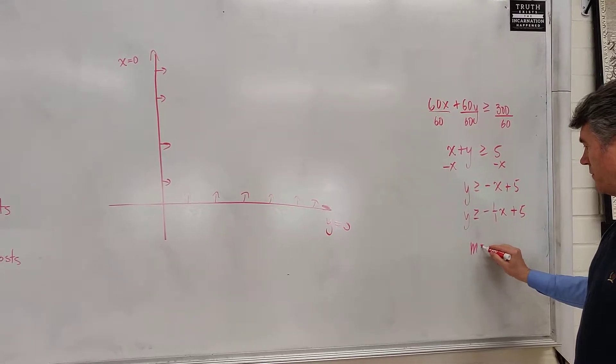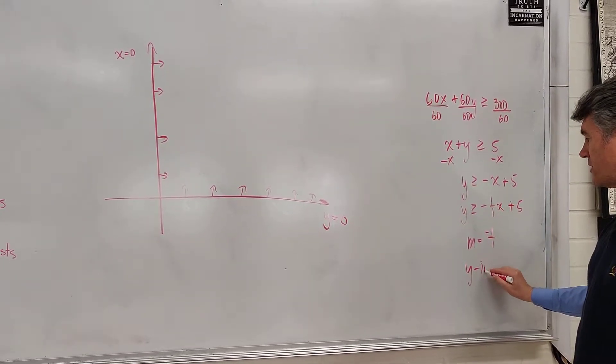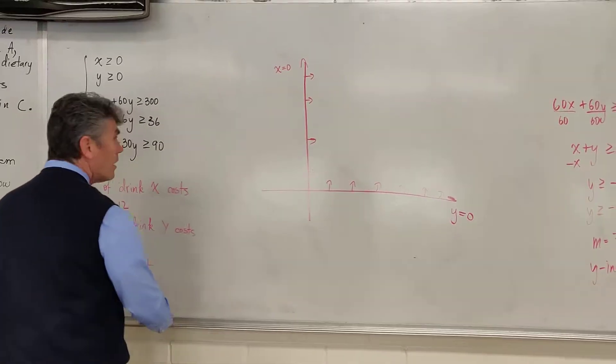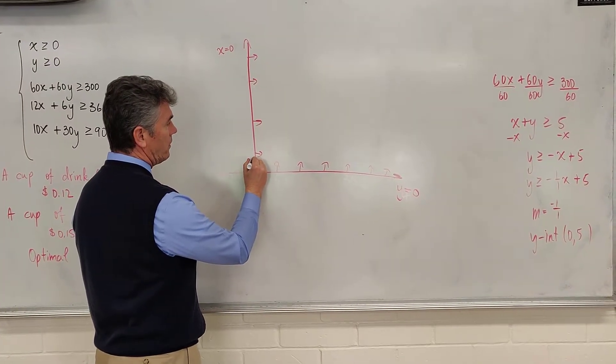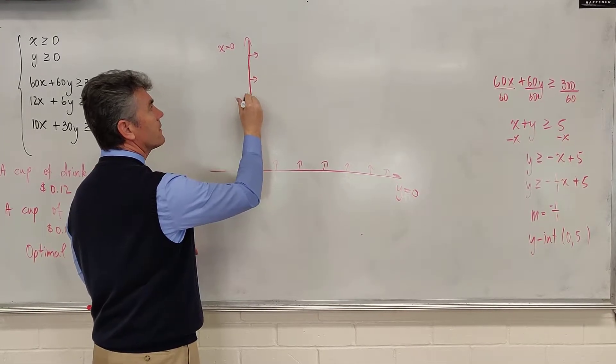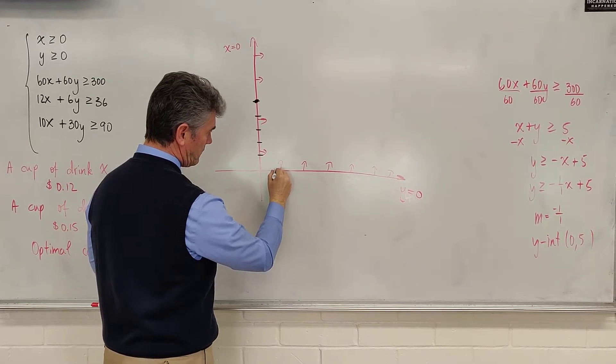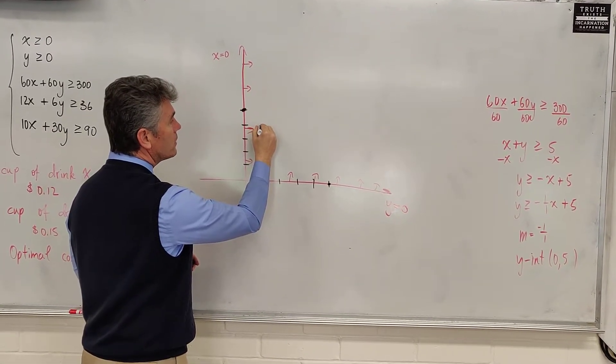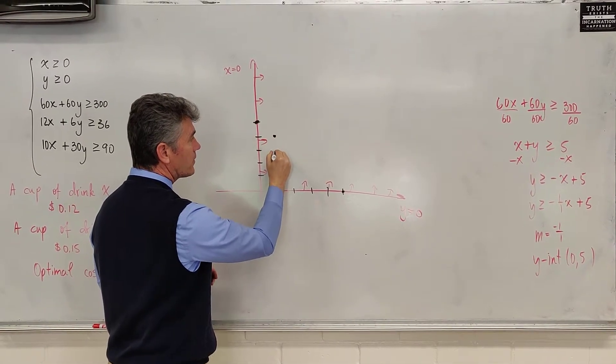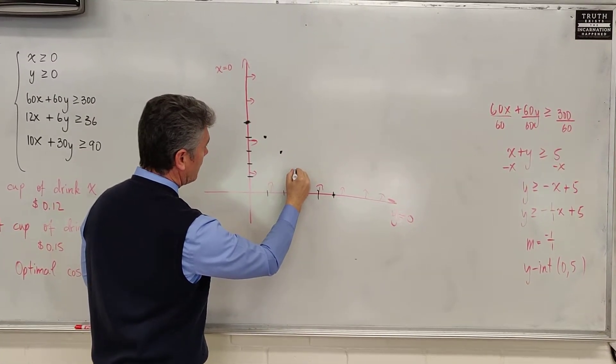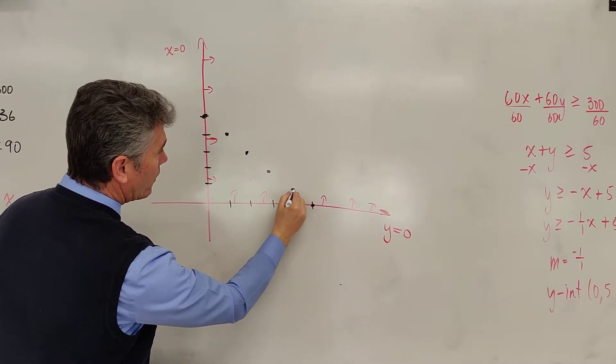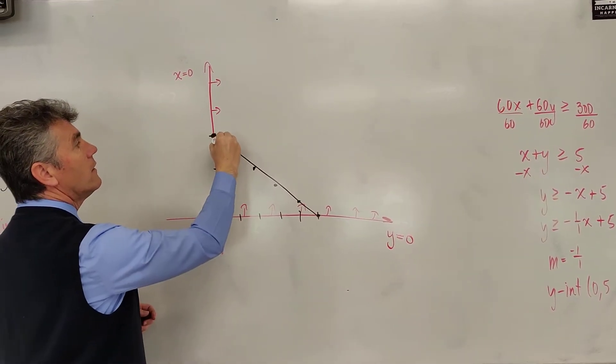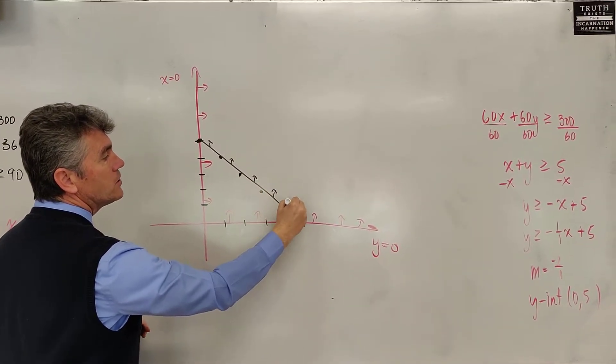This gives us a slope of negative 1 over 1 and a y-intercept of 0, 5. Graph it really, really carefully, because we also want to find vertices. Here we go. 1, 2, 3, 4, 5. There's our point. And then, let's go 5 units to the right on the x-axis. From this point, go 1 unit to the left, down and 1 to the right. Another unit down and 1 to the right. Another unit down and 1 to the right. And 1 more. And then, draw just this segment. That's all you want to draw. And the region that you want to shade is the region above it.